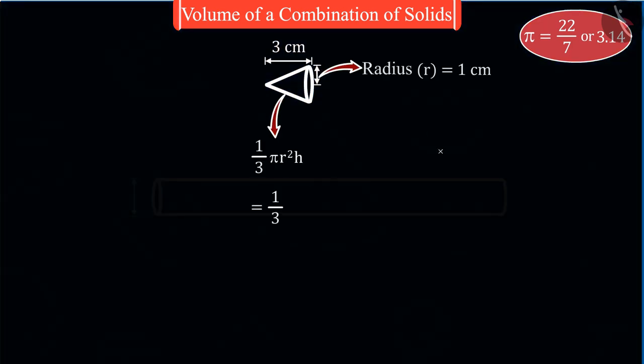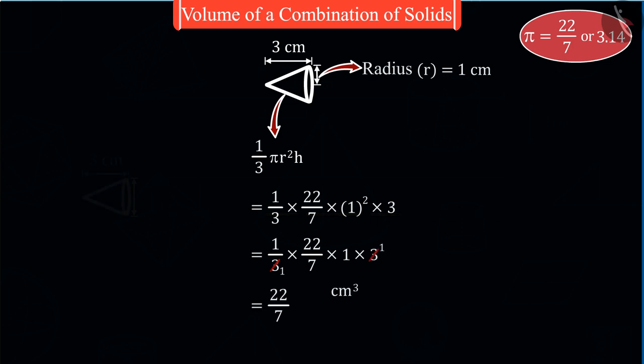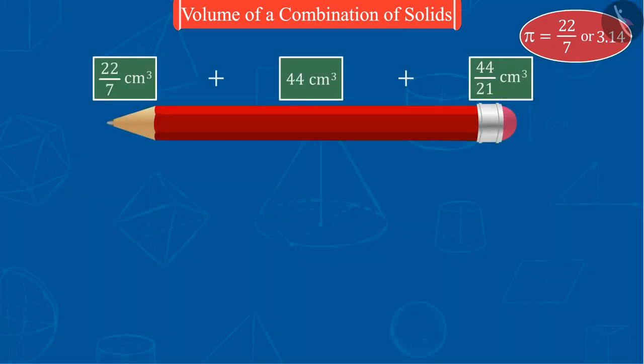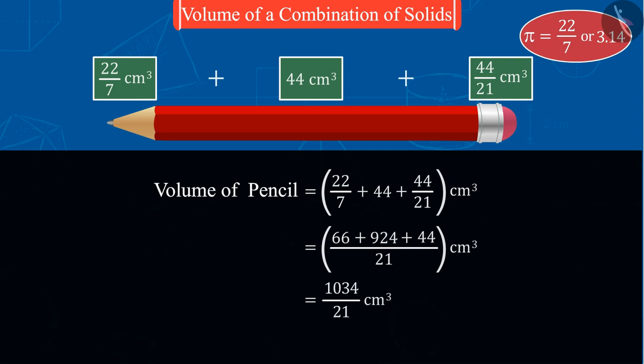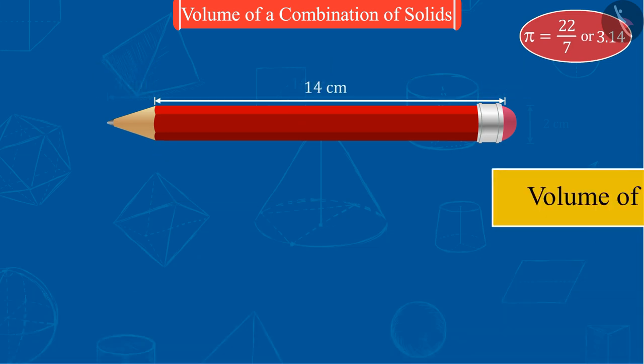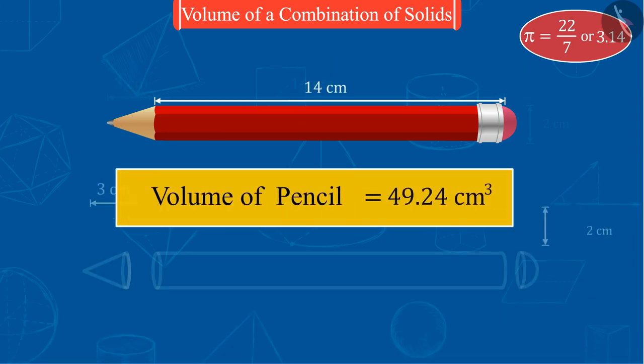Similarly, on solving for cone, we get 22 upon 7 cubic centimeters. Now, on adding the volumes of these figures, we can find out the volume of the pencil, which is 49.24 cubic centimeters.